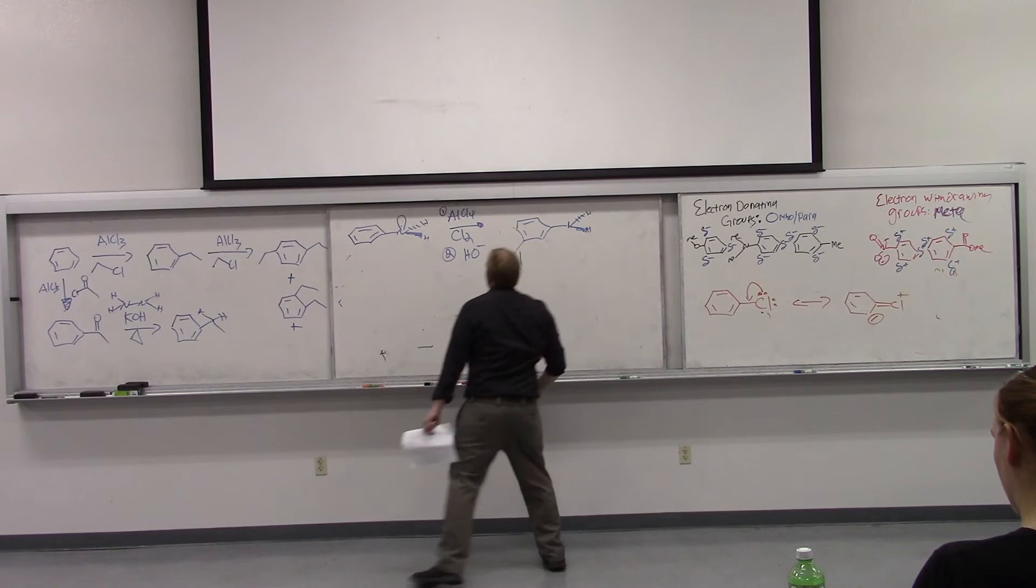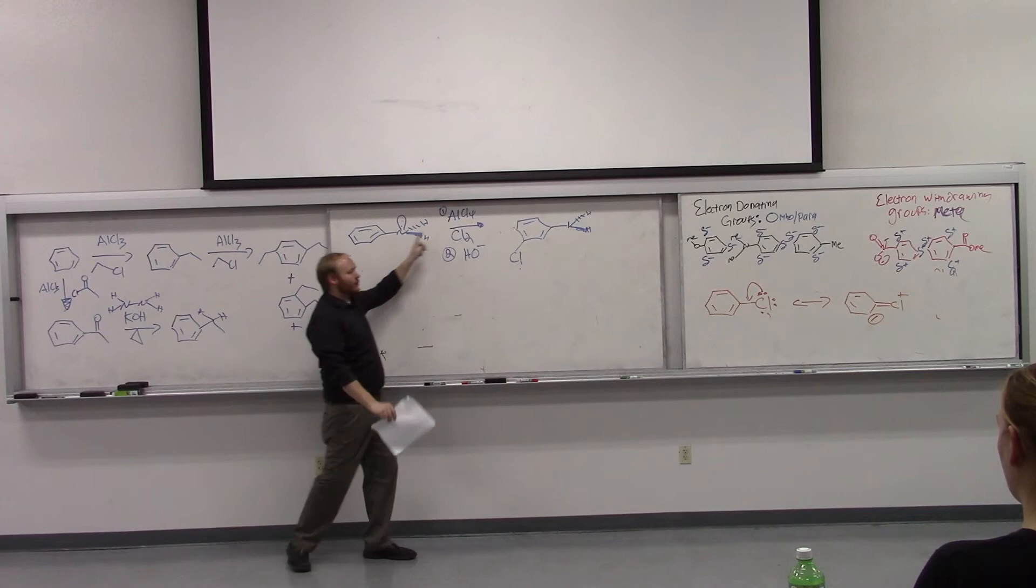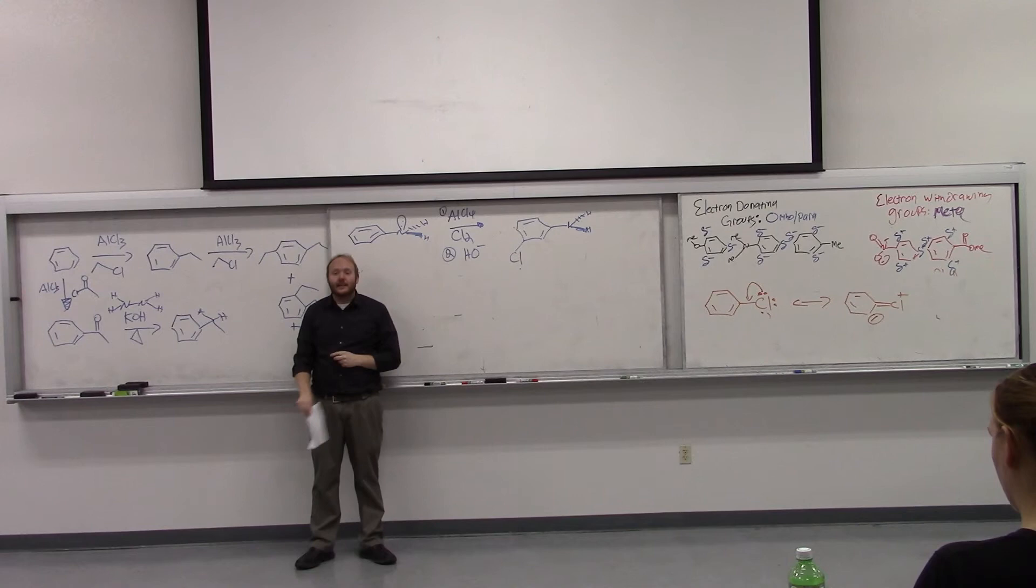So why, under acidic conditions, either Lewis with aluminum chloride or Bronsted with sulfuric acid, why under acidic conditions do amines become electron withdrawing meta directors? The lone pair grabs the hydrogen. Nice. Did anyone hear that? Okay.